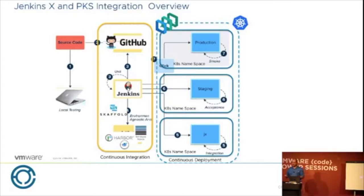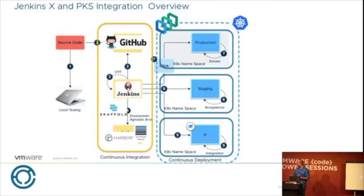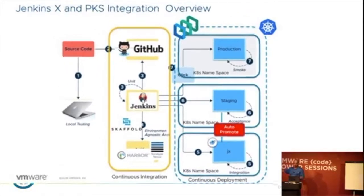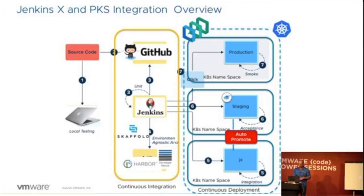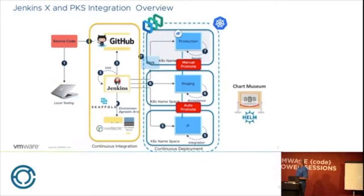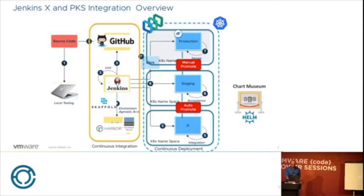Each time we change the code, we create a new version of our application, and with JenkinsX we get a new container image. When we start the first deployment, the container runs in the JX environment. When we want to move the application to staging, we do a pull request with GitHub, which promotes the pipeline and moves the application to staging. Then we can move the application to the production environment, where the new container image will run. With JenkinsX, we also create a Helm chart for each version, out of the box, and store it in Chart Museum — the repository for Helm charts.